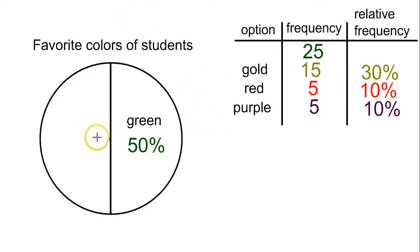Next option, we have gold at 30%. Remember, a fourth would be 25%. So something a little bigger than a fourth is going to be 30%. And generally when we're sketching these by hand, we're just doing our best estimate. But you want it to be pretty close.